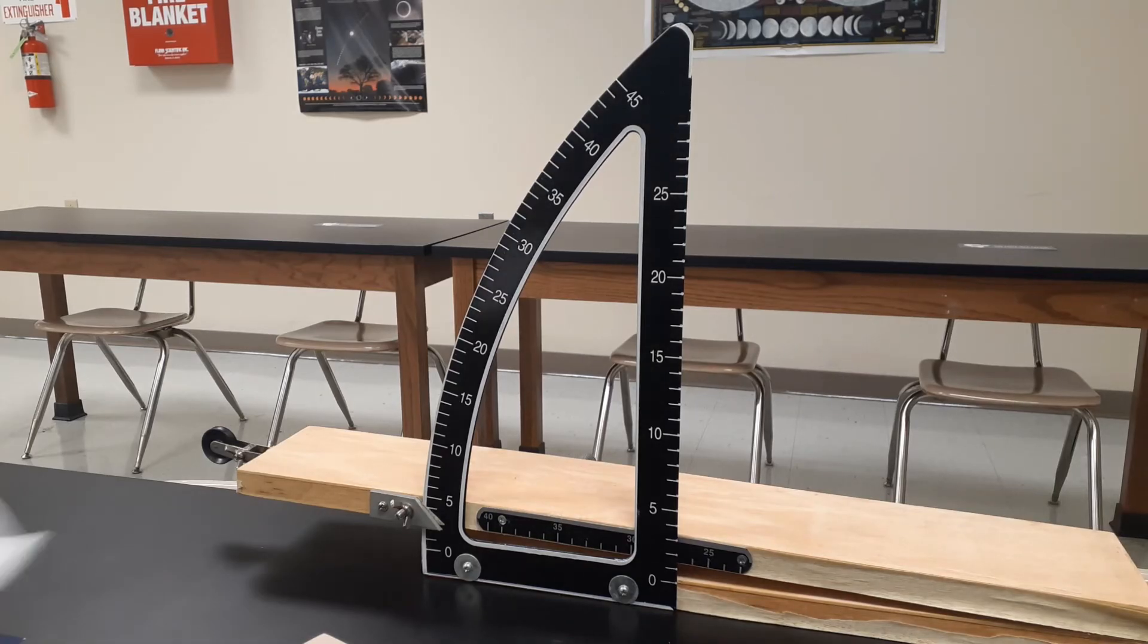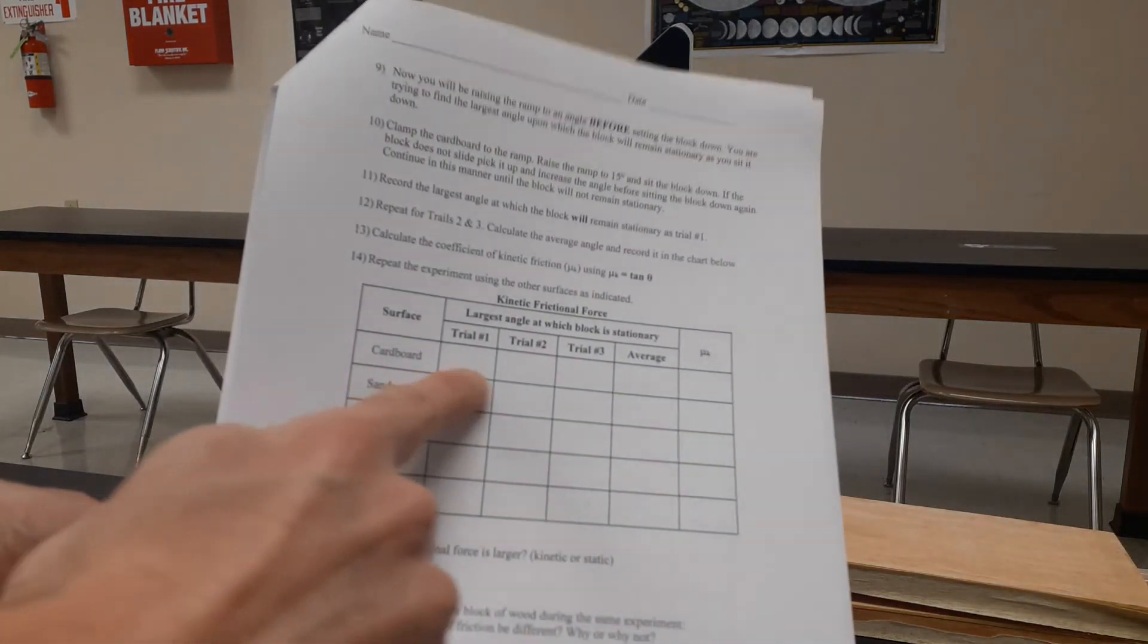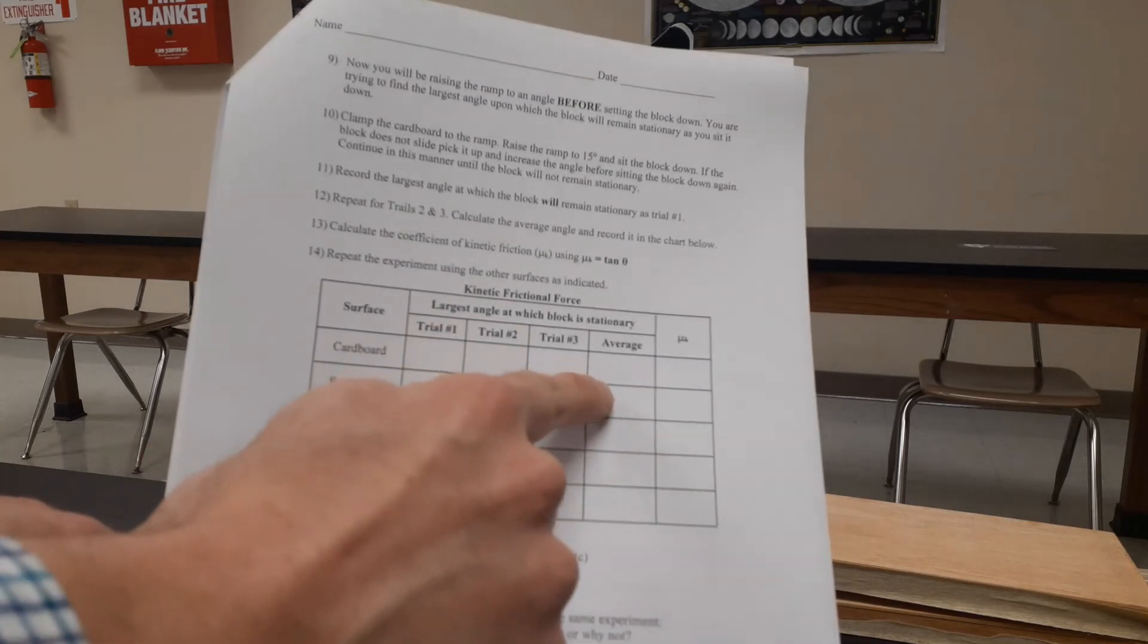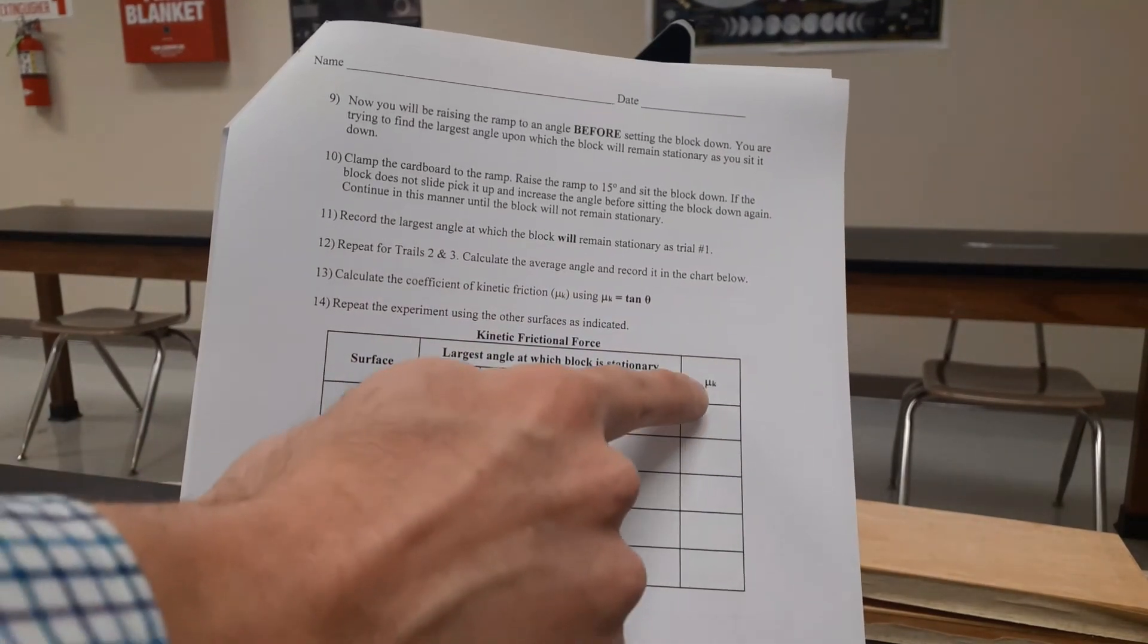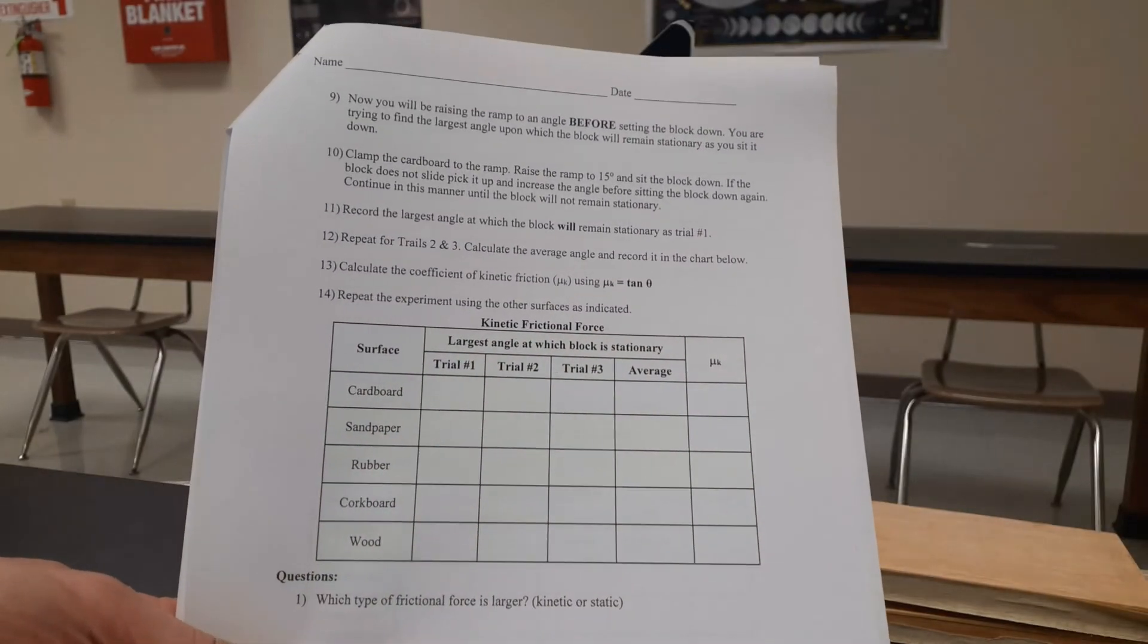Now do the same thing you did on the first part. Take the average of these three. Add them together, divide by three. Take the tangent of that average angle to give you that coefficient of friction.